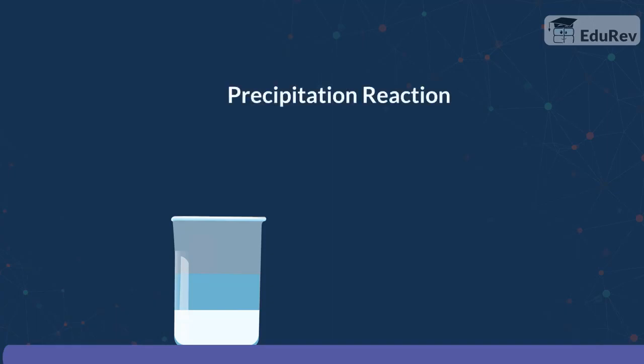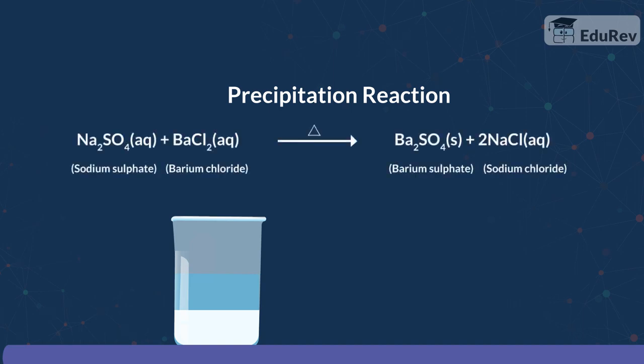Such a reaction leading to a precipitate formation is called a precipitation reaction. In this case, the white colour precipitate of barium sulphate is formed by the reaction of barium and sulphate. The other product, sodium chloride, which is formed, remains in the solution.